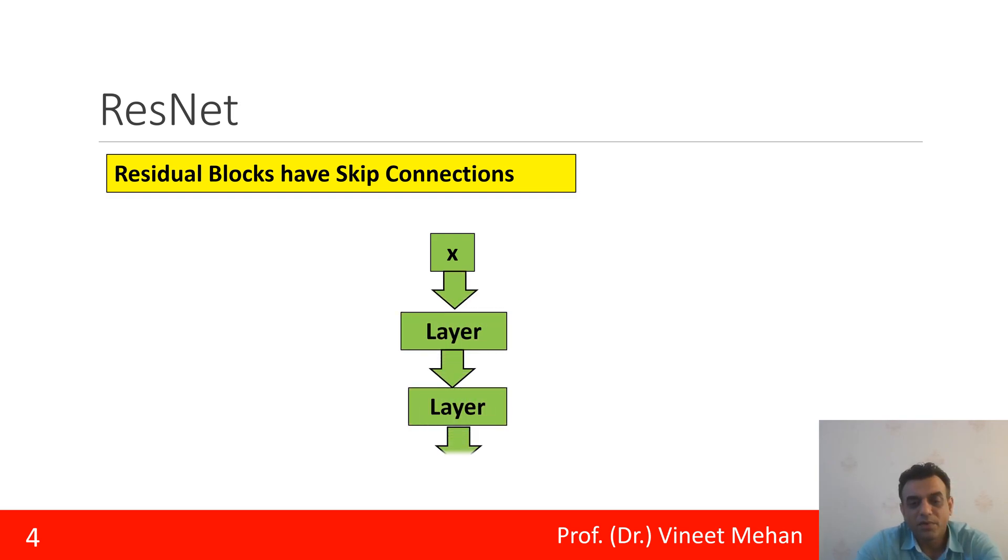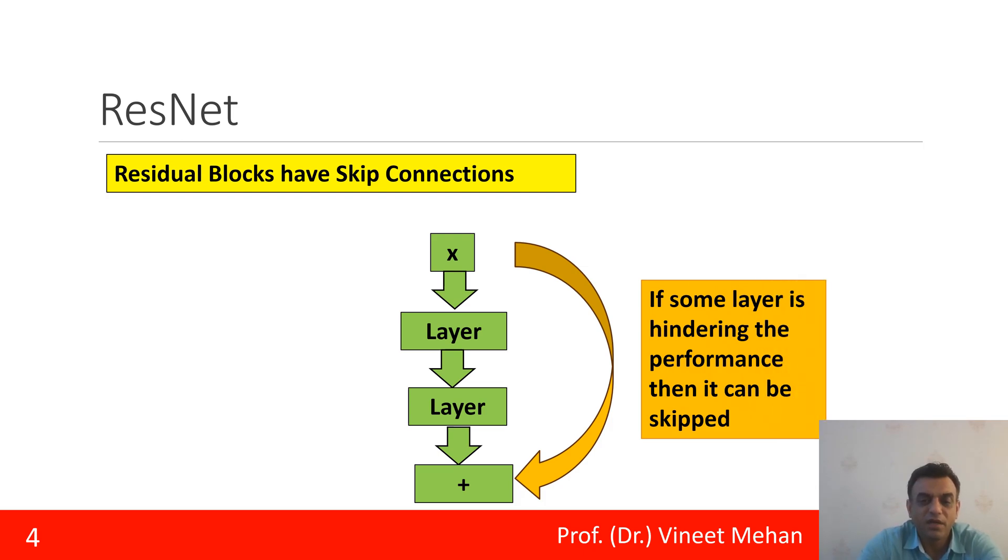What are skip connections? Let us see here in this diagram. Initially we have an element x that is a data point, and it passes through layers—layer 1, layer 2, and the next part. If layer 1 and layer 2 are insignificant or hindering the performance, then they can be skipped. When they are skipped, a block is created. Skip connections create residual blocks.